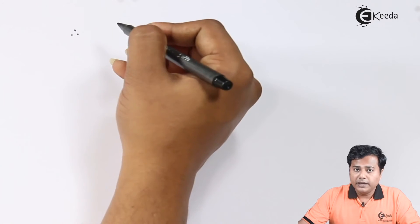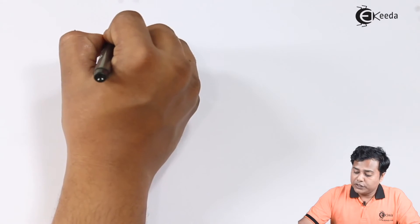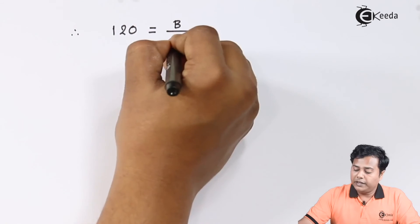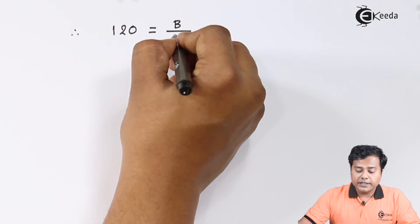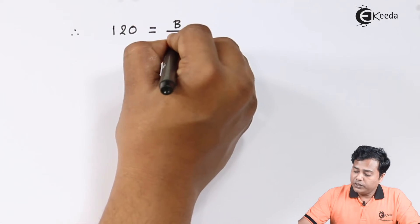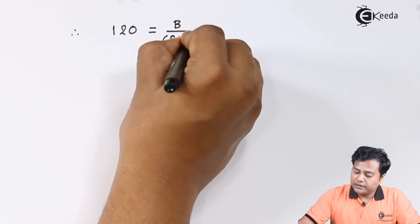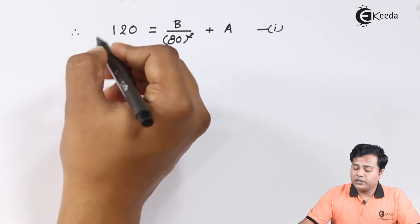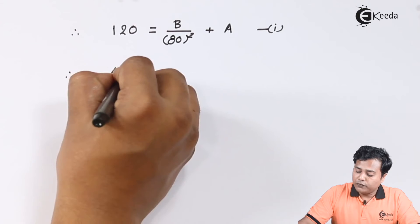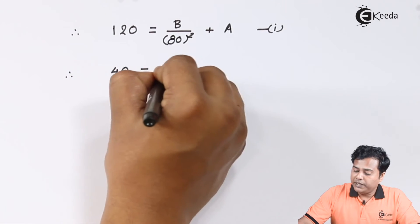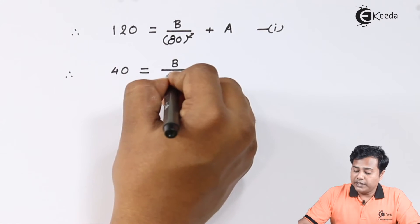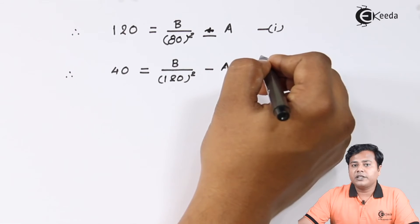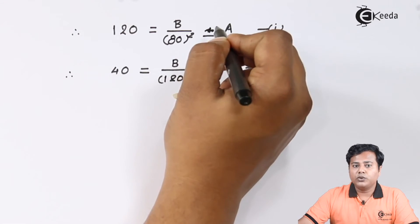Substituting values: at the inner radius, 120 Newton per mm square equals B divided by 80 squared plus A — equation one. At the outer radius, 40 Newton per mm square equals B divided by 120 squared plus A — equation two. These are two simultaneous equations with unknowns A and B.